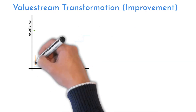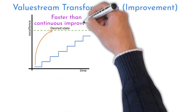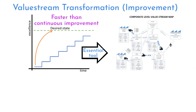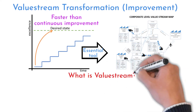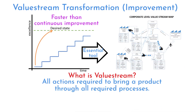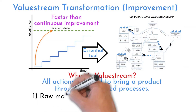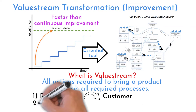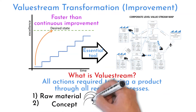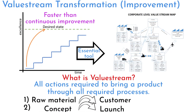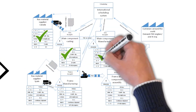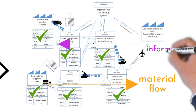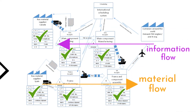Value Stream Transformation, or VST, is a method that helps reach a desired state faster. The key tool here is value stream mapping. A value stream is all the actions required to bring a product through all required processes — from raw material to customer for products, or from concept to launch for design. Value stream mapping helps visualize material and information flow through those processes and how they are linked.